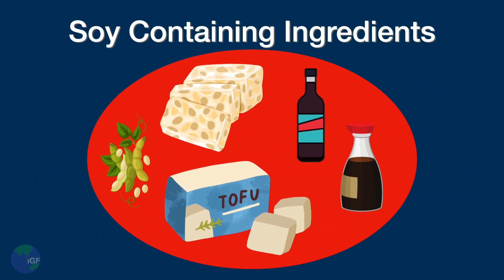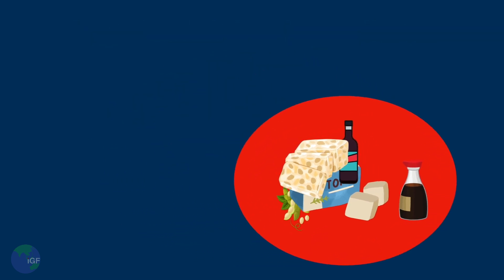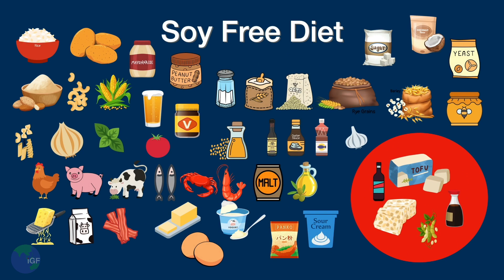Some people have an allergy or intolerance to soy. They must eliminate things such as soy sauce, tofu, tempeh, edamame, and anything that contains soy flour. Soy sauce is confusing — people who are soy-free will eliminate it because it contains soy, but people who are gluten-free will eliminate it because it contains wheat. There are many other good options that soy-free people can safely eat.